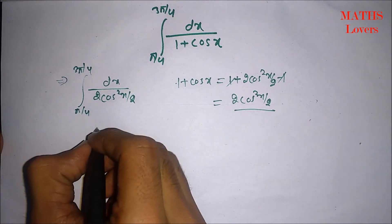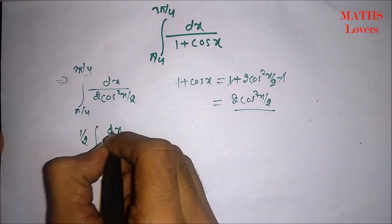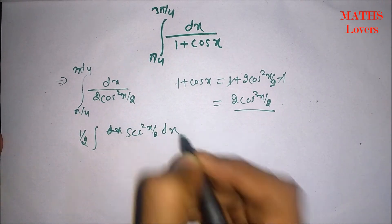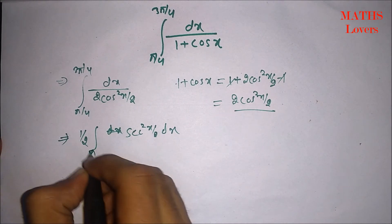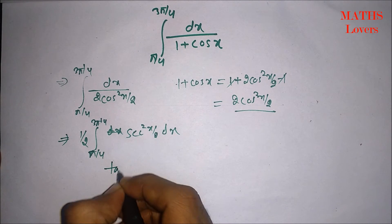Now, 1 upon cos square x by 2 can be written as, if I take 1 by 2 outside, it can be written as sec square x by 2 dx. Now, we know the integration of sec square x by 2. That will be tan x by 2.